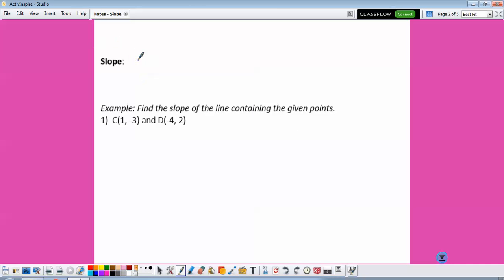Slope, our formula we use, slope is represented by the letter M, and it is Y1 minus Y2 over X1 minus X2. So if we want to find the slope of the line containing these points, this would be X1 and Y1, X2 and Y2.